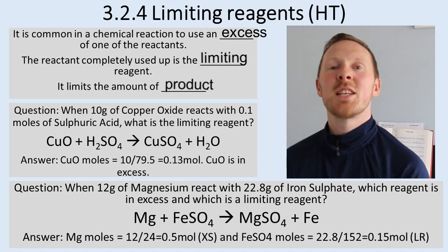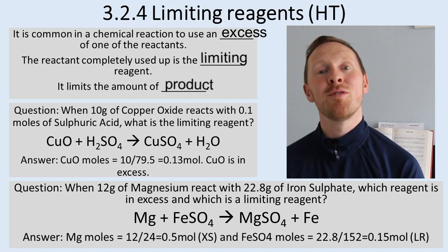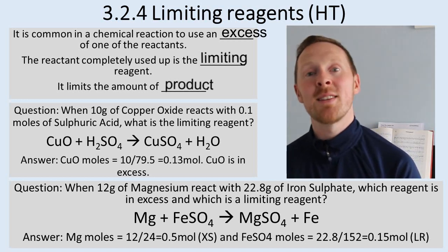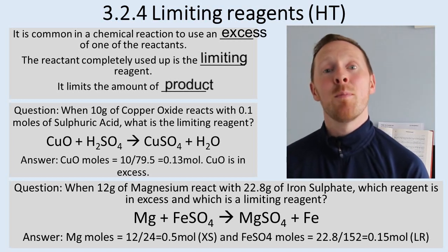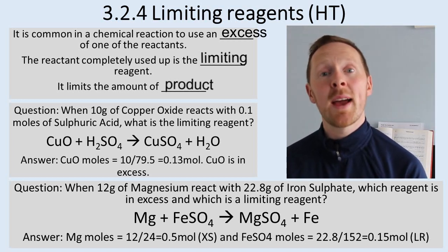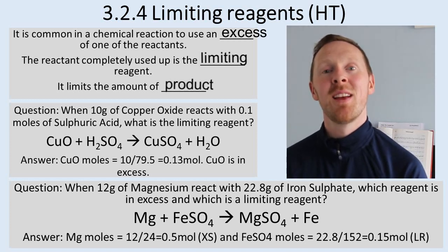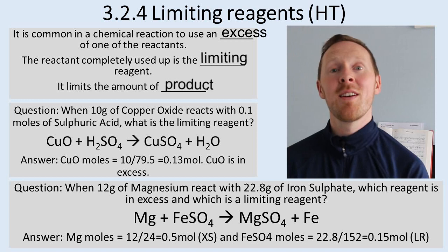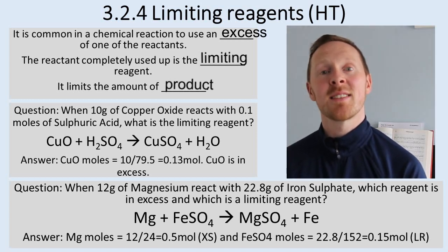Let's look at a displacement reaction. Say we've got 12 grams of magnesium reacting with 22.8 grams of iron sulfate. Magnesium is more reactive than iron so it displaces it. Looking at the equation, it's a one-to-one reaction: one mole of magnesium reacts with one mole of iron sulfate. So all we need to know is how many moles of each we have, and we can work out which one's in excess.